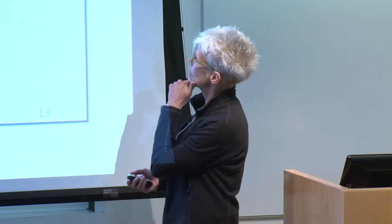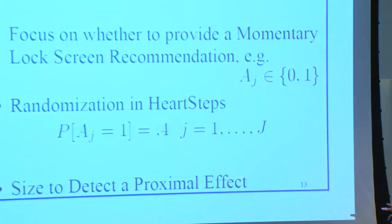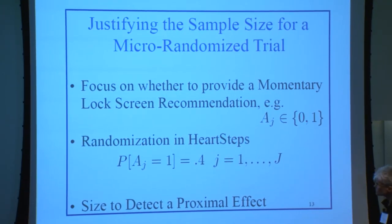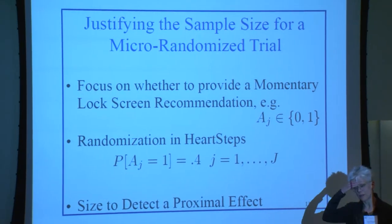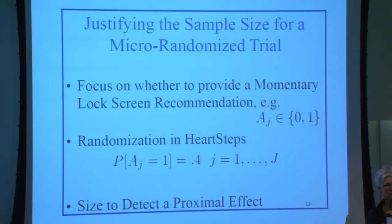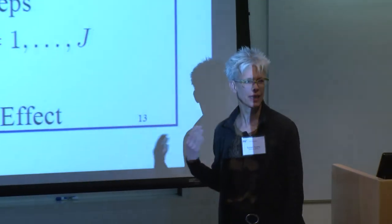In HeartSteps, we focus on whether or not we provide a message — so the action is binary. The randomization is not one-half/one-half, as I initially wanted as a statistician for high power. That's completely inappropriate because of the burden issue. You cannot be pinging these people too much. The investigator said on average two times a day, which is why there are five opportunities and a 0.4 probability of treatment. In studies with more decision times, that probability might be even more skewed.